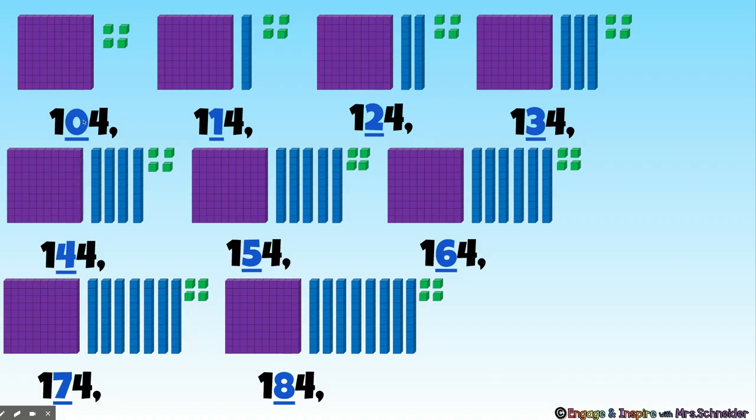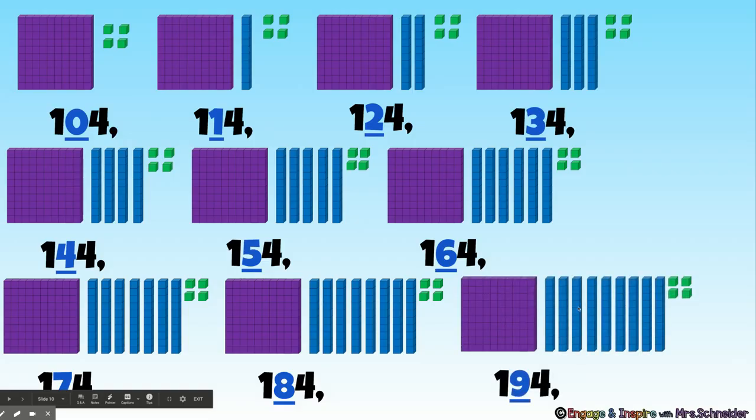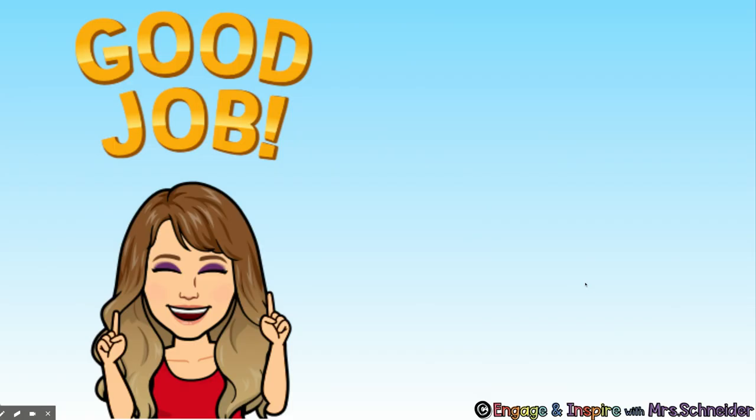See? The number that changed was in the tens place because we were counting by tens. The hundreds and the ones stayed the same. So it was 10, 20, 30, 40, 50, 60, 70, 80, 90.